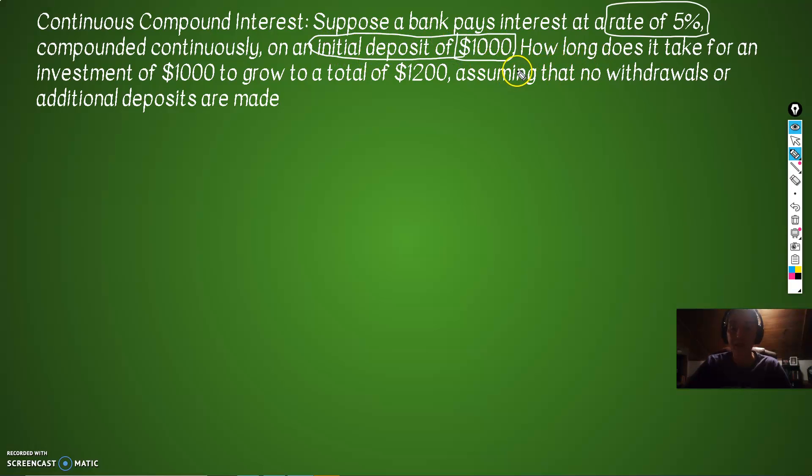Initial, so here's an initial amount. How long does it take? So how long means we don't know T. We're going to find T. For an investment of $1,000 to grow to a total of, hey, here's the amount, of $1,200. With no withdrawals or additional deposits.